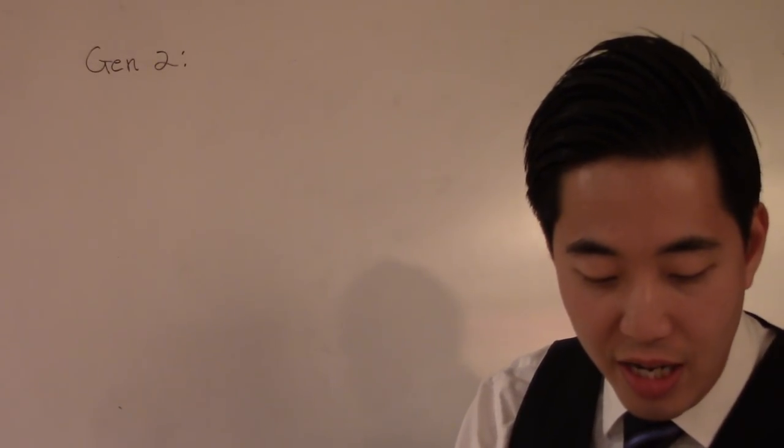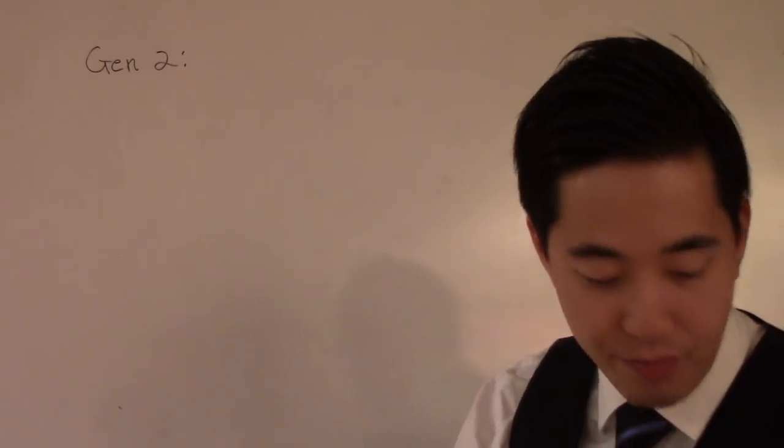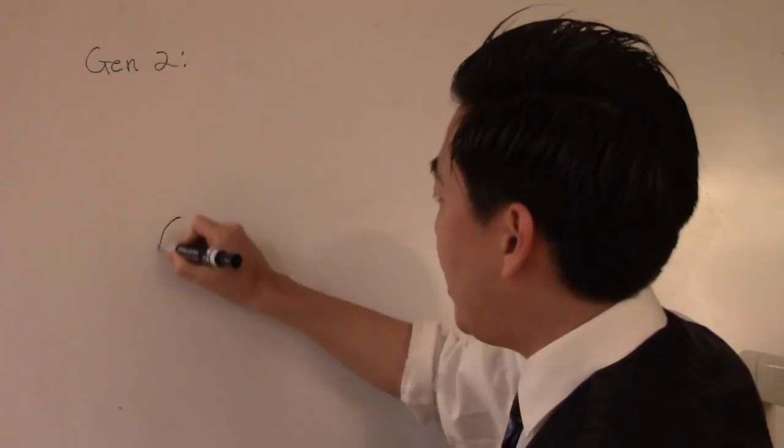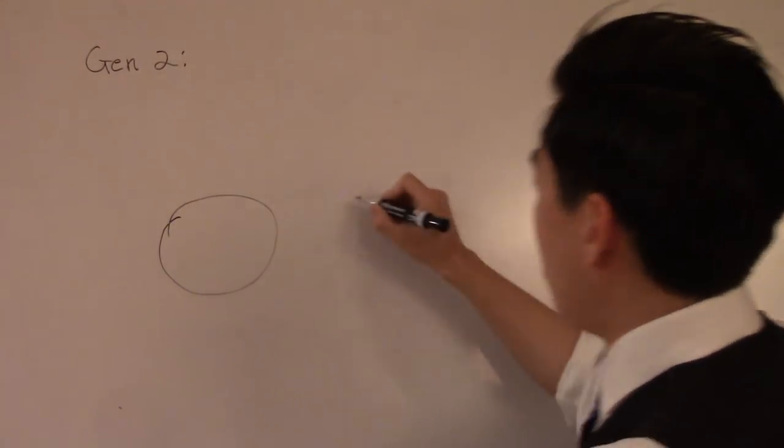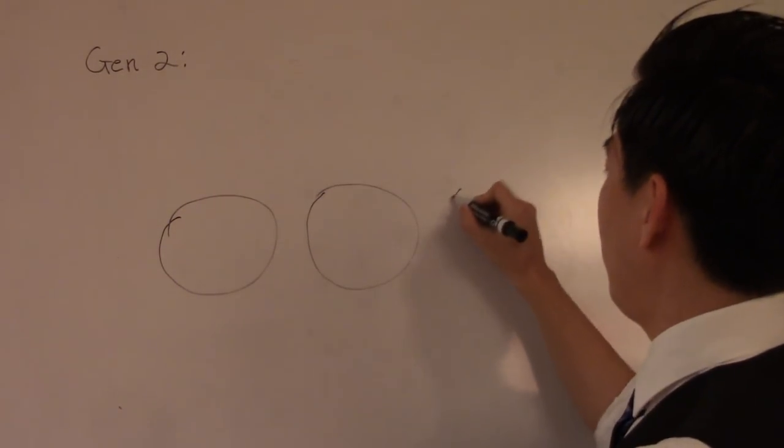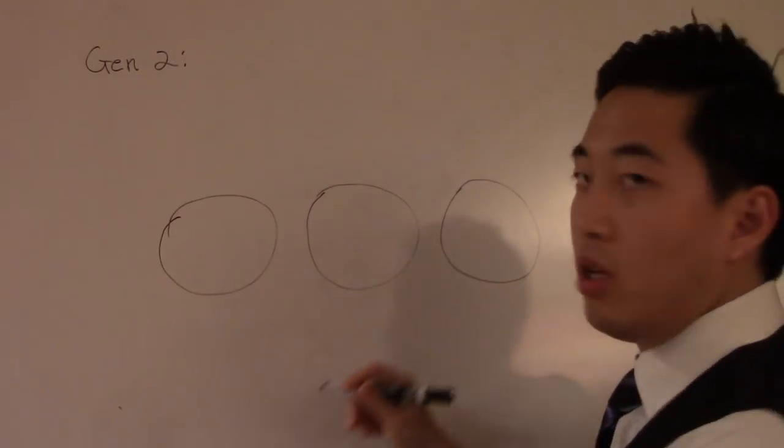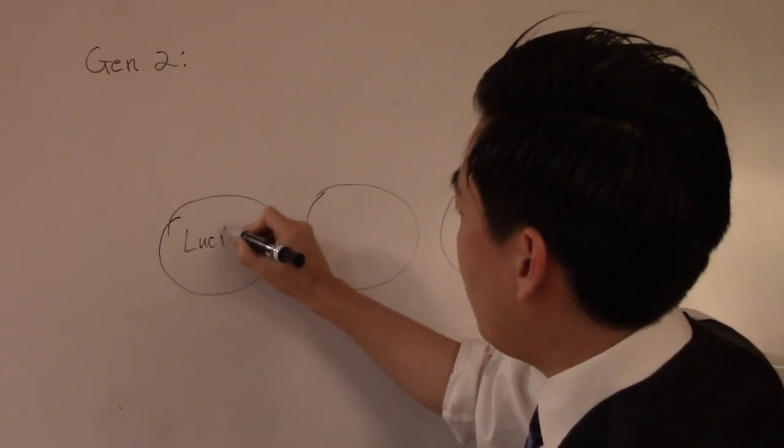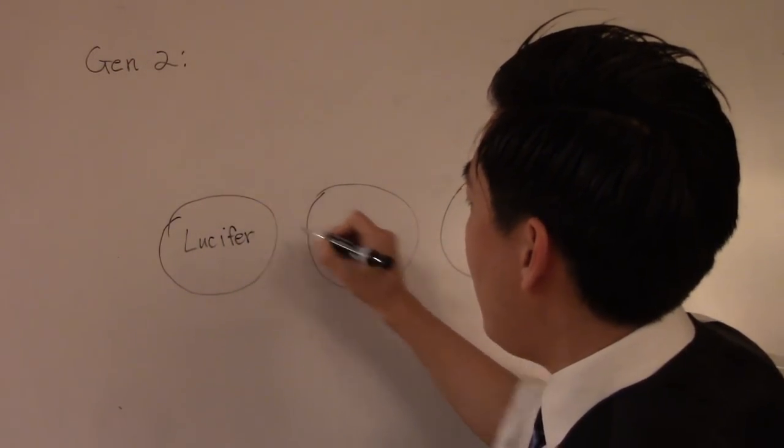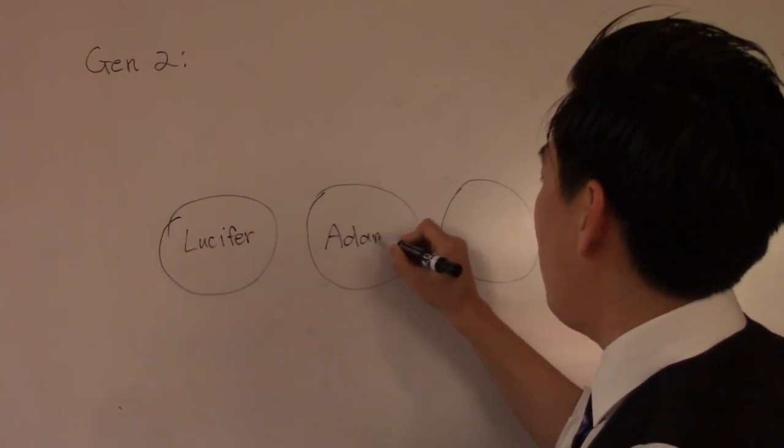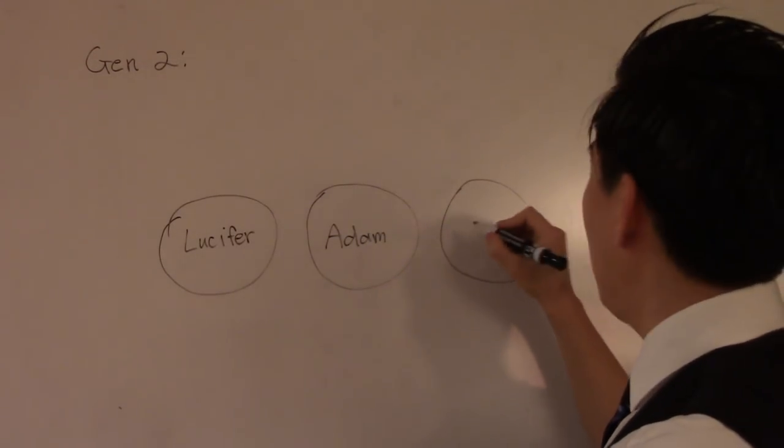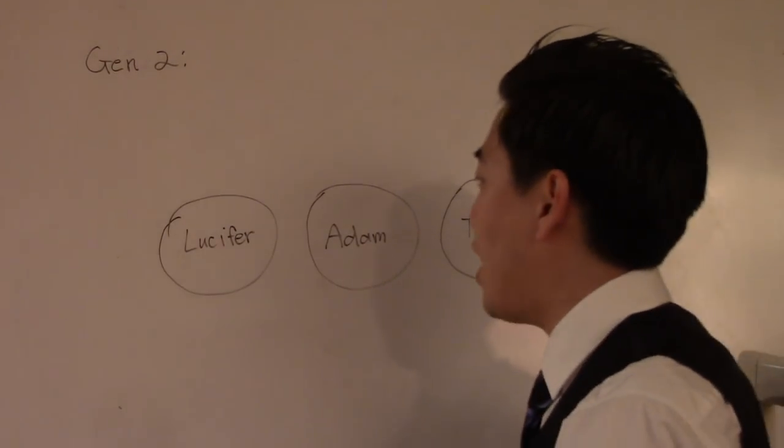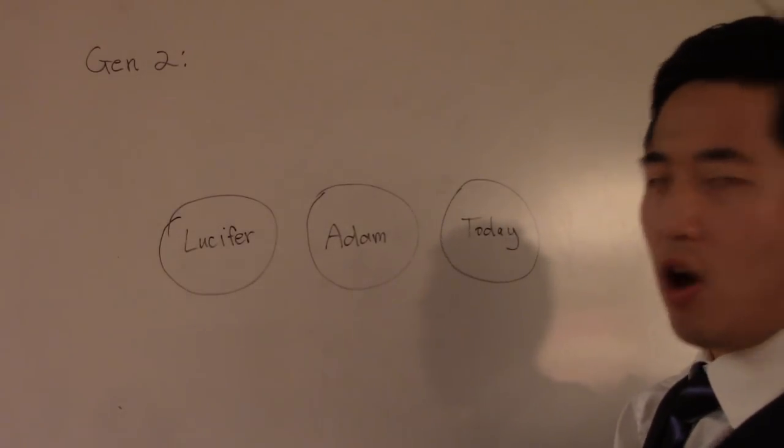Now the Garden of Eden did not start with Adam and Eve. It started out before Adam and Eve. So we're going to put three worlds right here. The first one came through Lucifer, then to Adam, and then we're going to look at today. So where is the Garden of Eden? Can we find it? Is it lost? What is the history of the Garden of Eden?